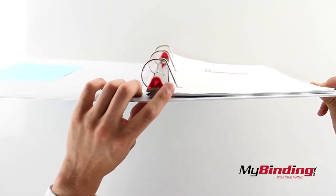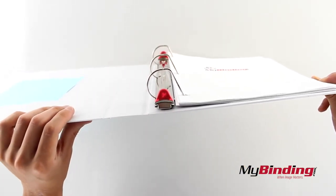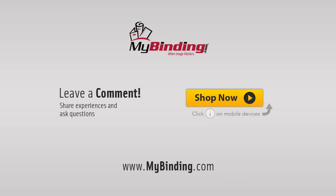Here's a better look at the slanted rings and the rubber tabs. Organizing paper is one thing we do well. MyBinding.com